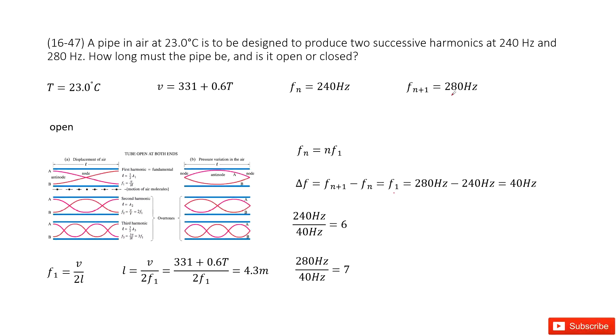Now we use 280 minus 240 to get f1, which is 40 Hertz. Next step: how can we determine if it is open or closed?